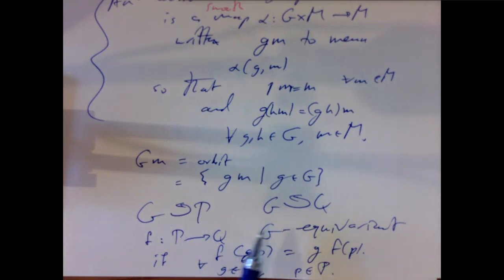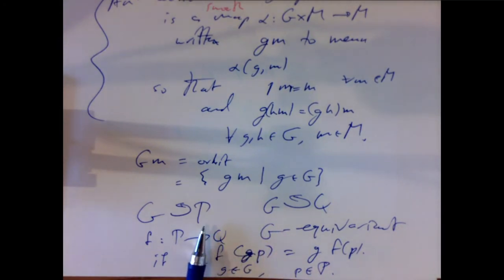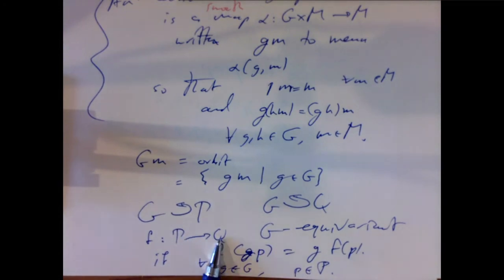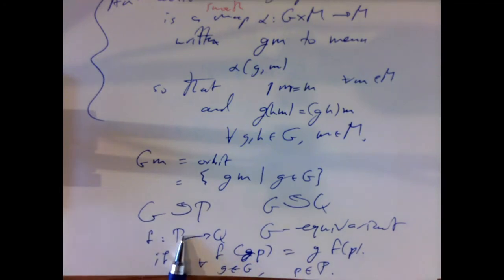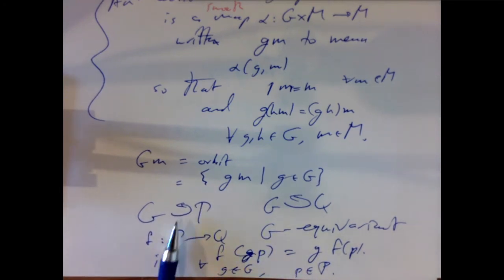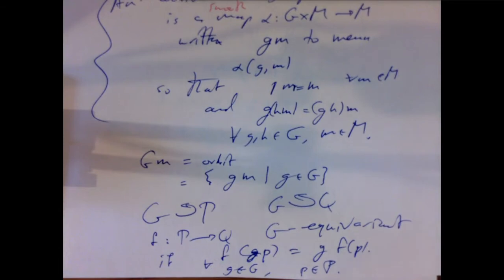If a Lie group G acts on manifolds P and Q, a map F: P → Q is said to be G-equivariant if doing the group action first and then applying the map gives the same result as applying the map first and then doing the group action — for all g in G and p in P. This lets us relate two different actions on two different manifolds, which is a very important idea.